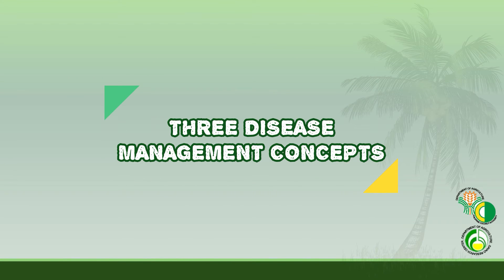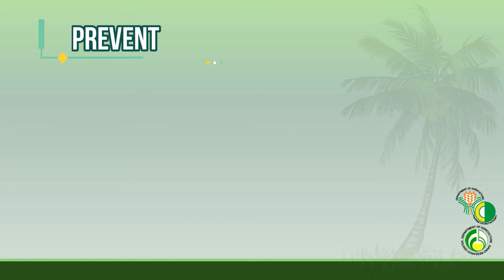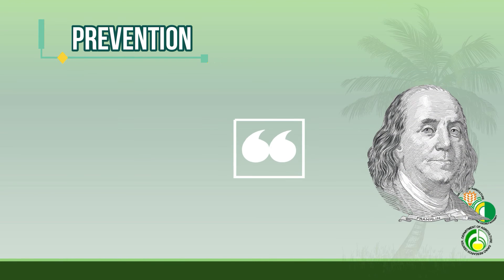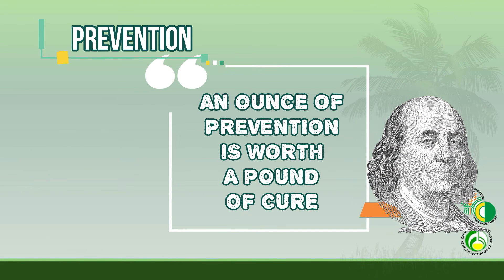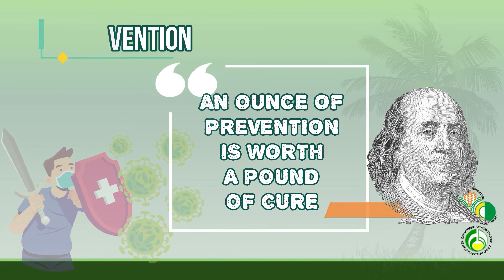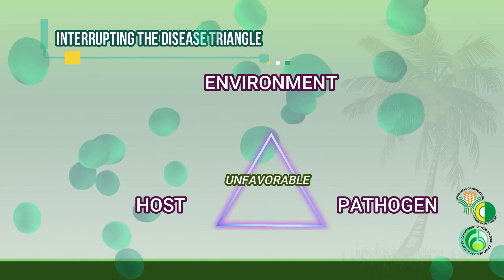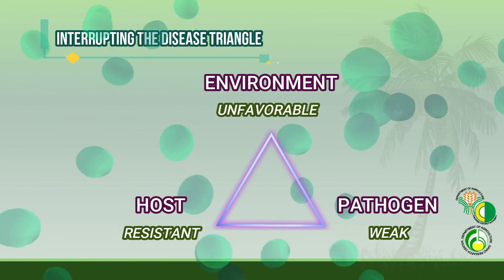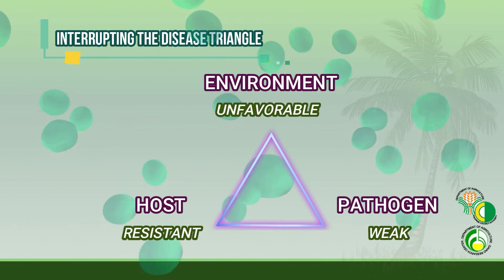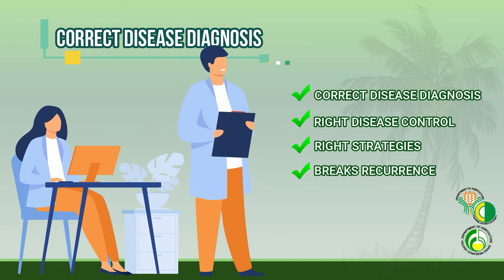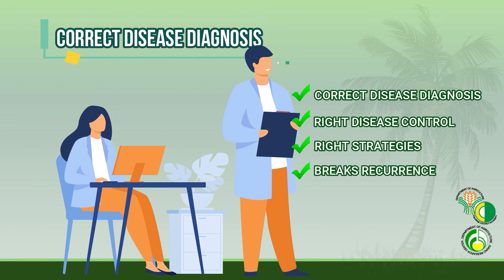There are three disease management concepts. First, prevention — as Benjamin Franklin said, an ounce of prevention is worth a pound of cure. Second, interrupting the disease triangle. And last, correct disease diagnosis.